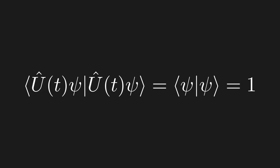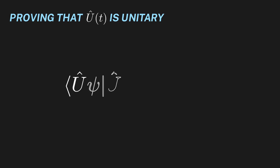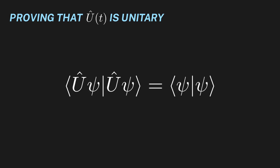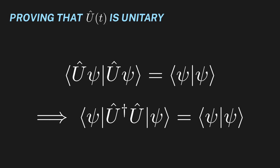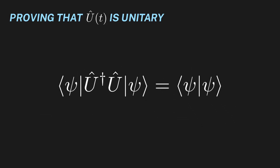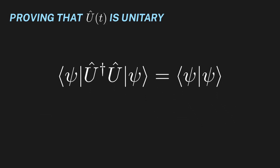Since we're deriving a very important equation, let's be rigorous and justify that this property indeed implies unitarity. For simplicity, we'll denote U of t as simply U. We want to prove that this equation implies U is unitary. To start, let's pull out the right-side U operator and use the Hermitian conjugate of the left U operator to move it to the middle, giving us the following.